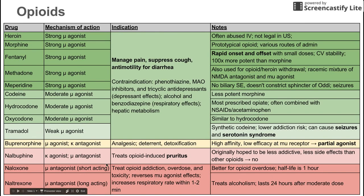This is going to be a short video on opioid drugs. Opioid drugs are a class of drugs that hit the opioid receptors. The three main opioid receptors are the mu receptor, the kappa receptor, and the delta opioid receptor.